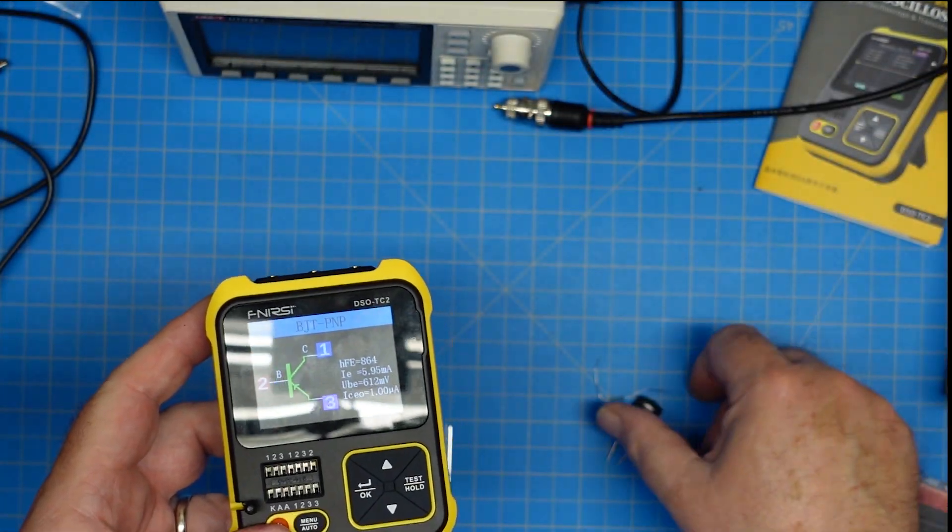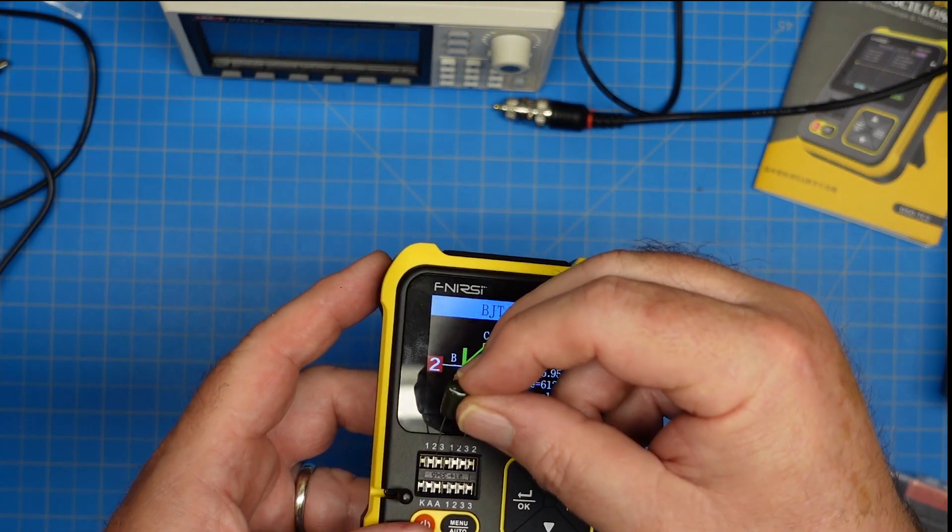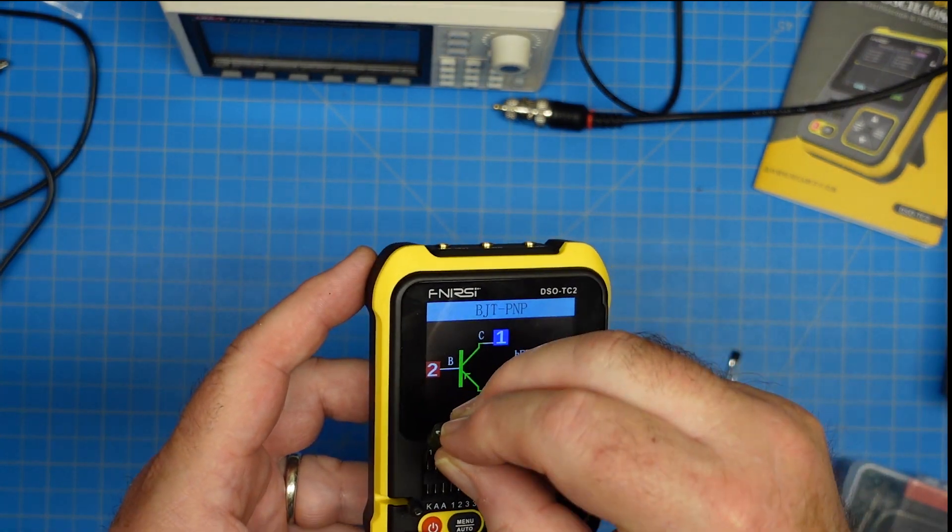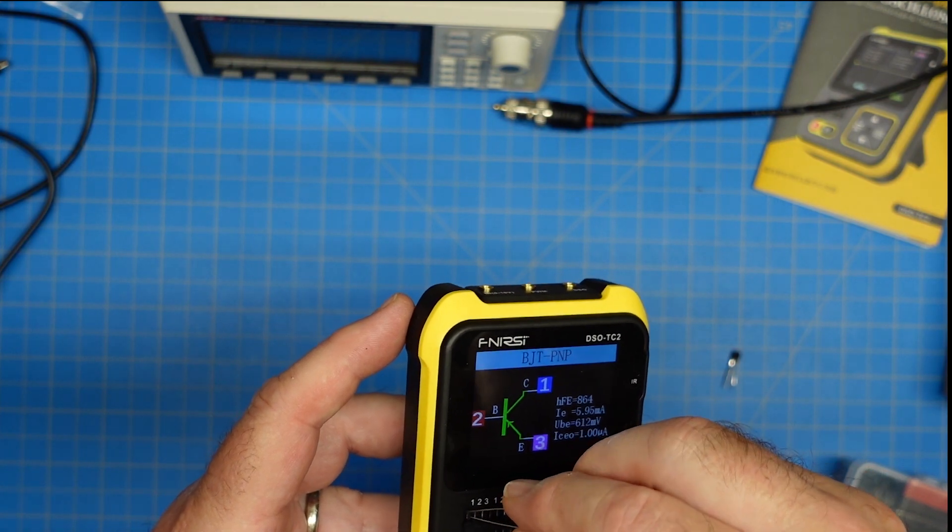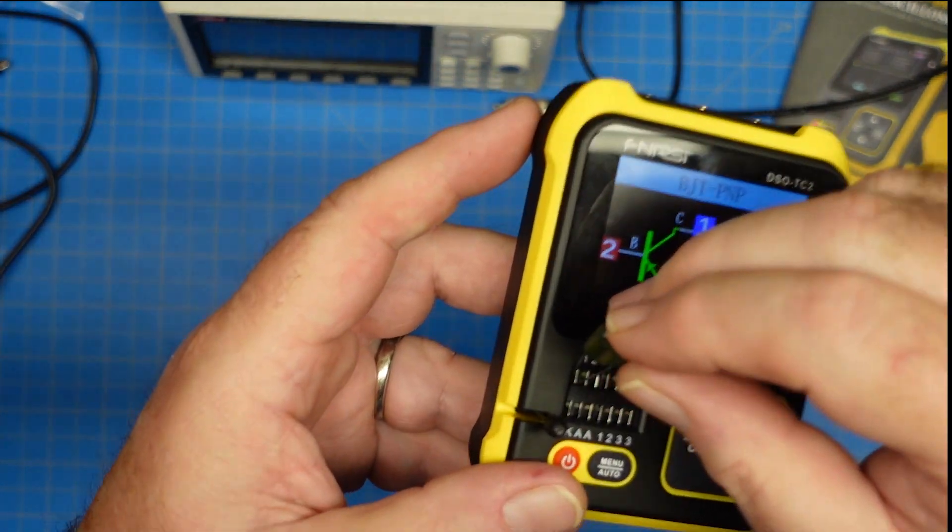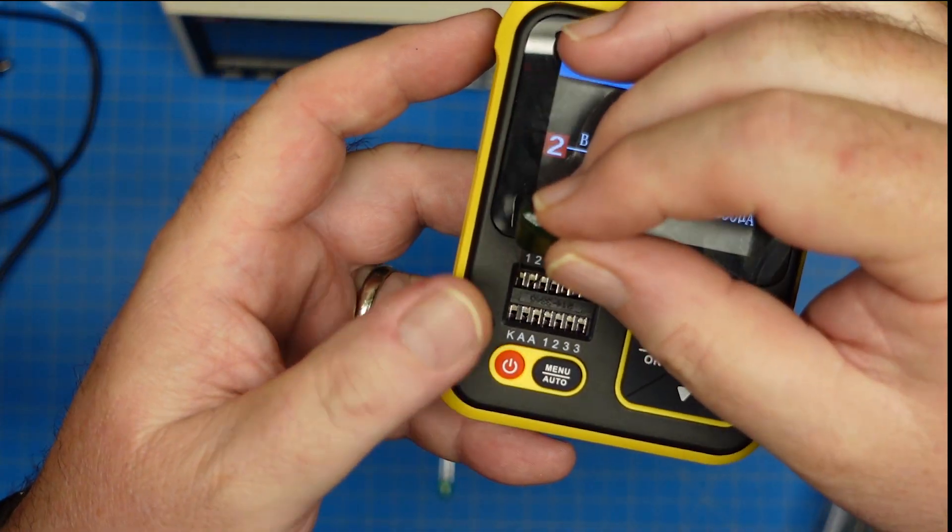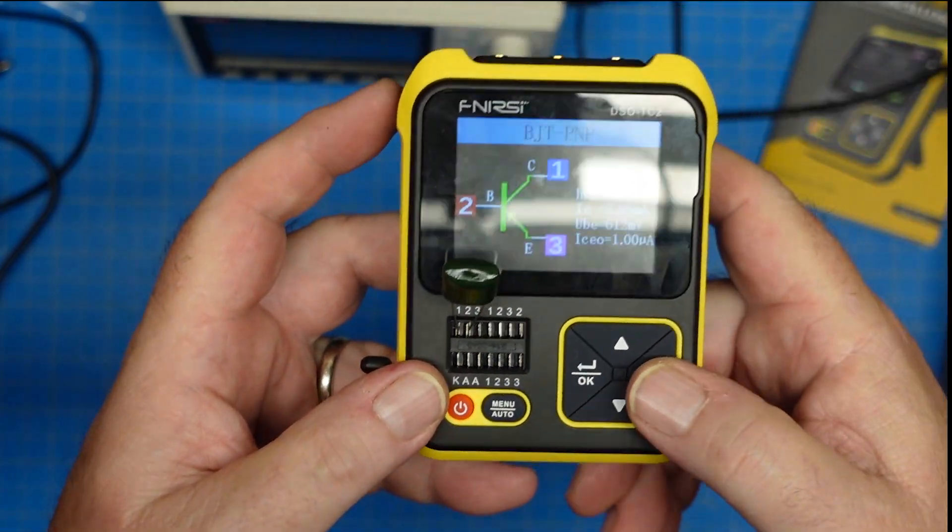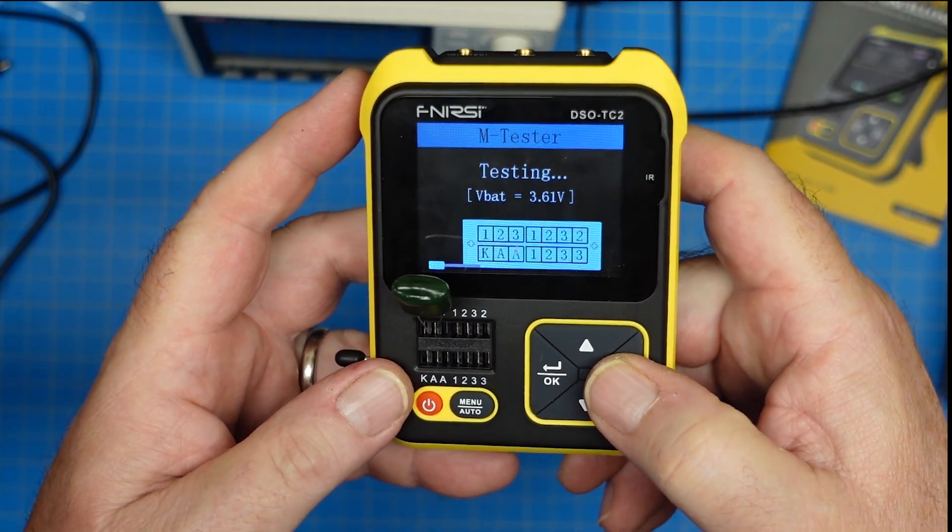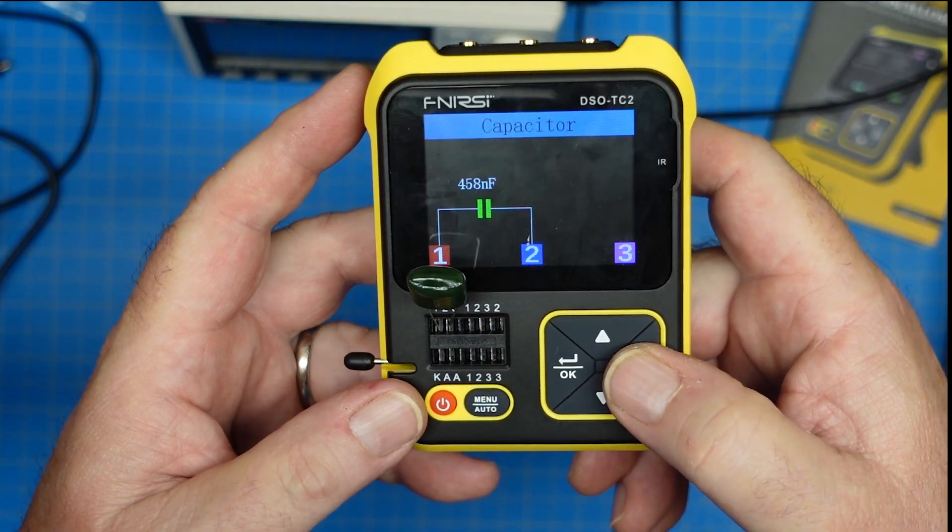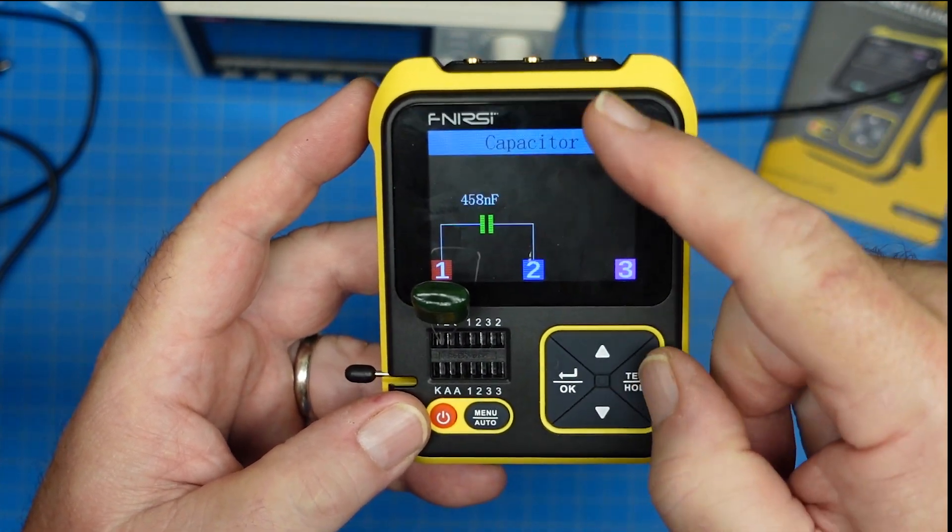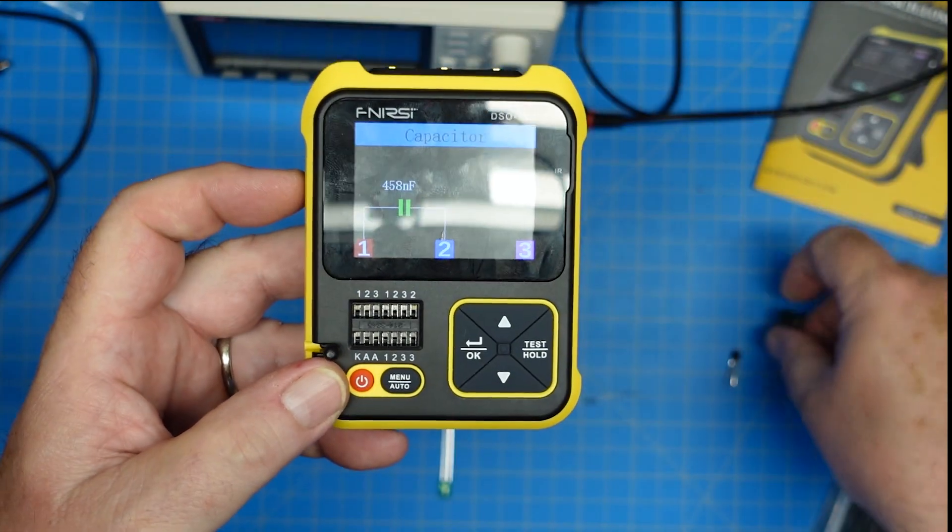So we take that out, and let's test a capacitor. So these are just some random parts I have, and we'll get that guy in there and lock him down, and then we'll hit test, and he'll come back and tell us that's a 458 nanofarad capacitor. Excellent.